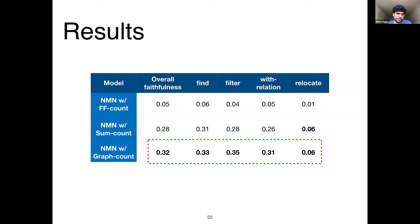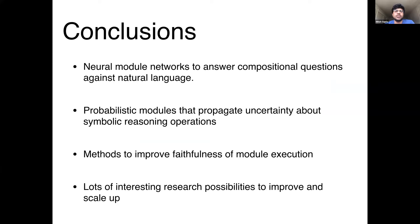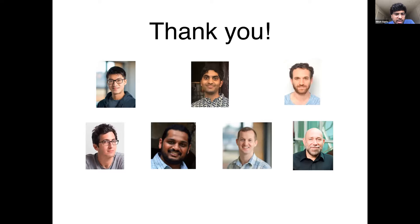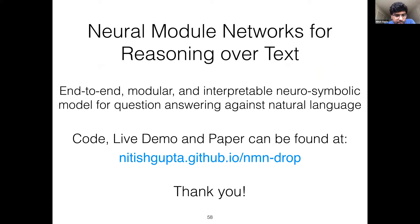In conclusion, I presented neural module networks to answer compositional questions against text, with probabilistic modules performing both natural language and symbolic reasoning in a differentiable manner to propagate uncertainty about intermediate decisions. I also proposed methods to improve the execution faithfulness of these modules using auxiliary losses and architectural choices. Code and a live demo of the neural module networks work are available at the provided link.